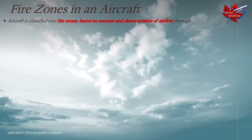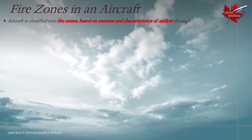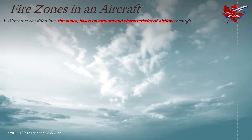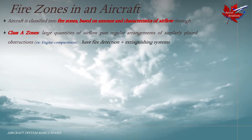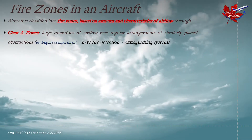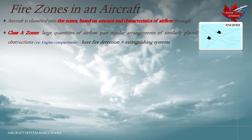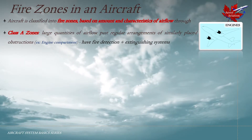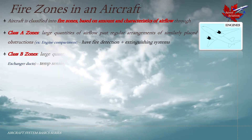Various compartments in the aircraft are classified into fire zones based on the amount and characteristics of air flow throughout these compartments. This also determines the effectiveness of fire detection systems as well as the effectiveness of the fire suppressant used. Class A zones have large quantities of air flow past regular arrangements of similarly placed obstructions, such as the engine compartment. These zones have fire detection and extinguishing systems installed, though the fire extinguishing may not prove effective enough as there is a possibility of the fire suppressant being carried out into the airstream before the fire is extinguished.